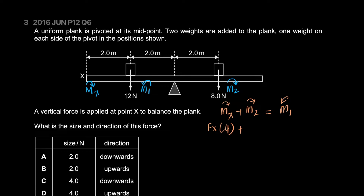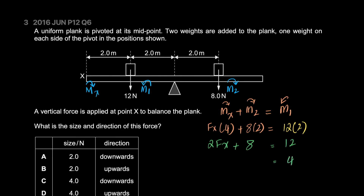MX is aided by M2, which is 8 times 2, and all of that is balanced by the 12 newton force which is 2 meters away. Dividing the entire equation by 2 gives: 2FX plus 8 equals 12. The difference of 4 over 2 gives FX equals 2. The force is definitely upwards at 2 newtons, so the answer is B.